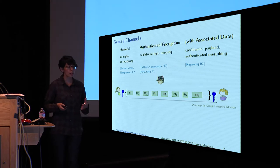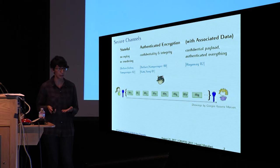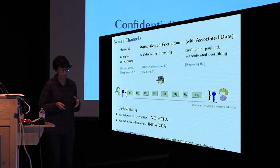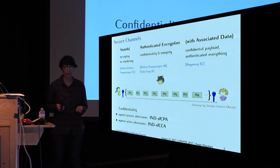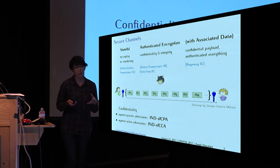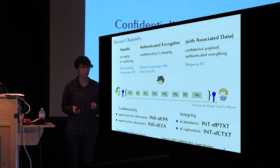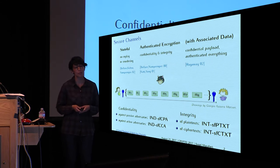To summarize, a basic secure channel can be modeled as stateful authenticated encryption with associated data. This gives rise to stateful notions for confidentiality against passive adversaries and against active adversaries, but also to stateful notions of integrity of plaintext and integrity of ciphertext.